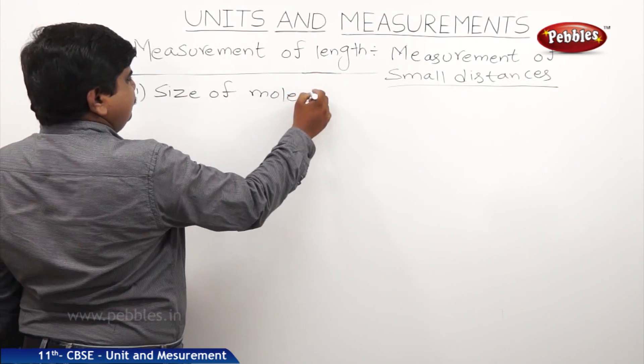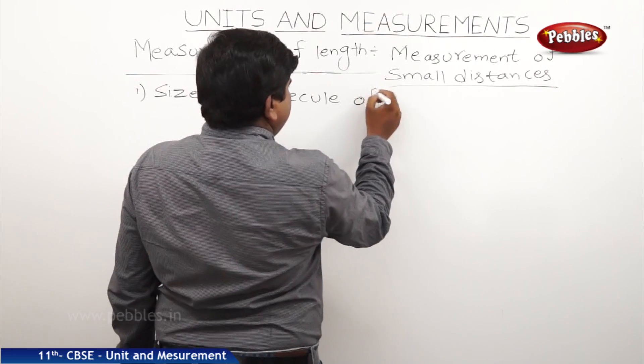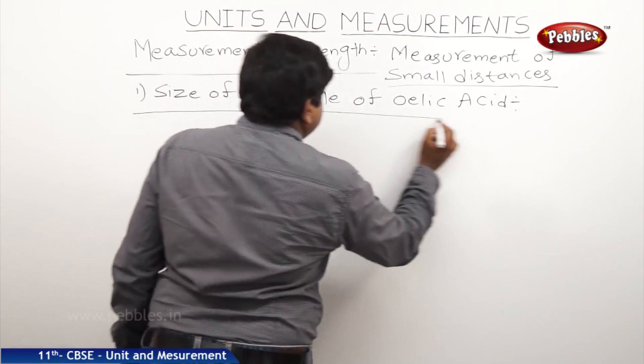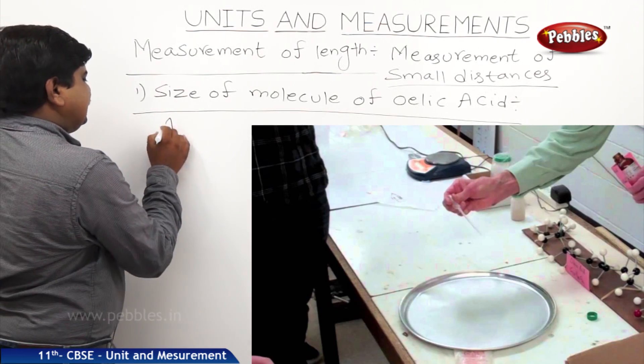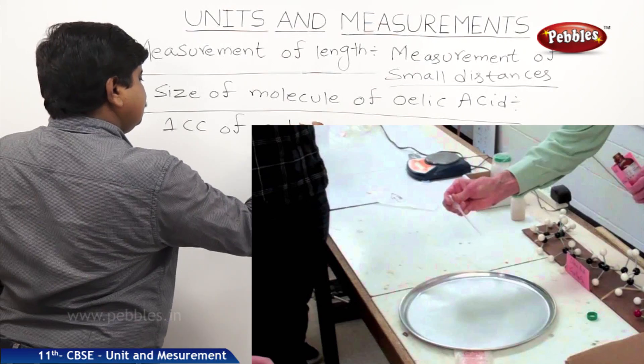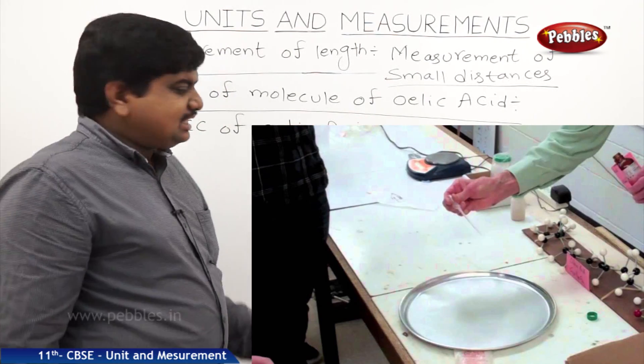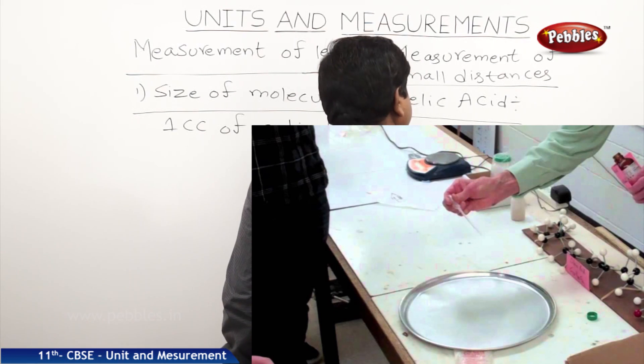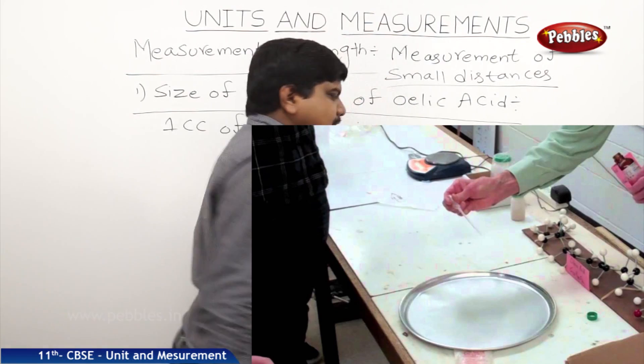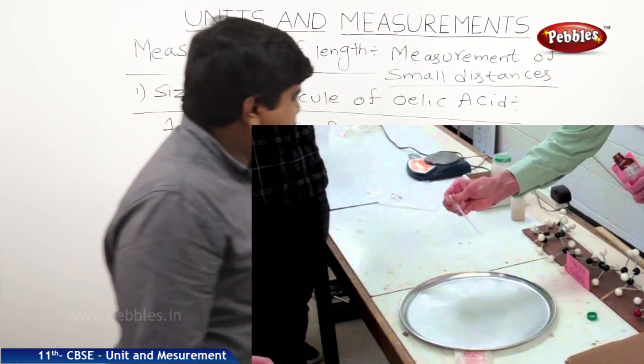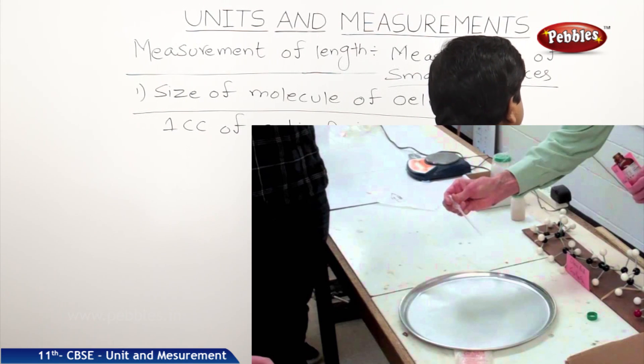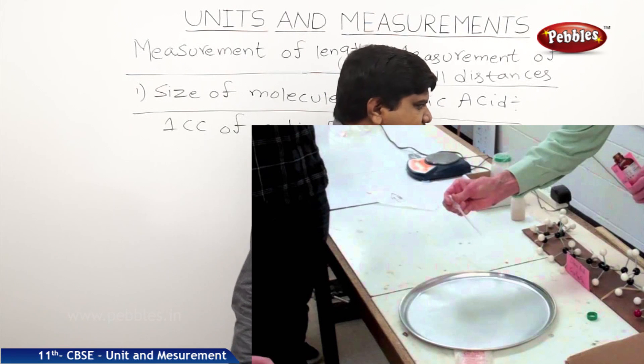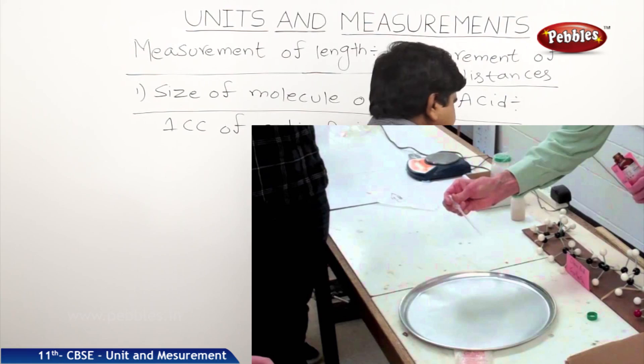For example, the molecule of oleic acid. Take one cc of oleic acid and mix with some amount of alcohol. If you mix the oleic acid with alcohol, a solution should be prepared of 25 cc. So one cc of oleic acid mixed with alcohol to prepare a solution of 25 cc.